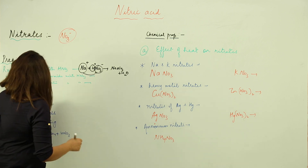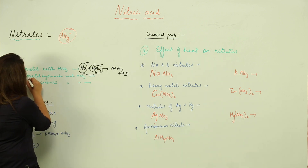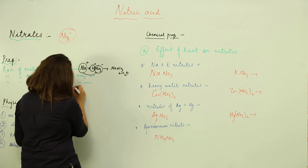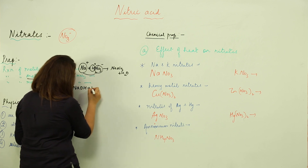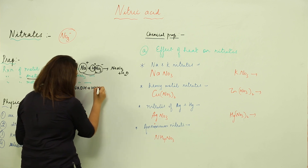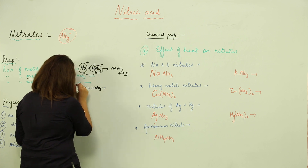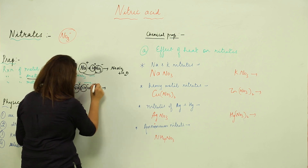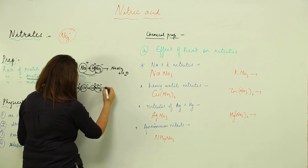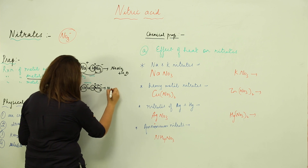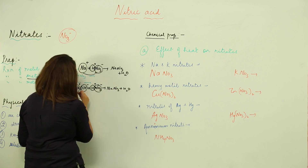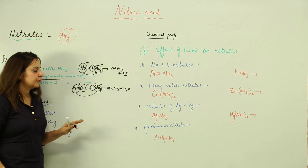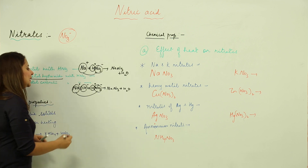We can also prepare nitrates by reacting metal hydroxides with HNO3. Writing the valencies, the positive part of the metal hydroxide reacts with HNO3 to give the metal nitrate (MNO3) along with H2O.